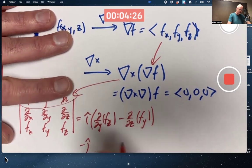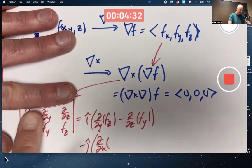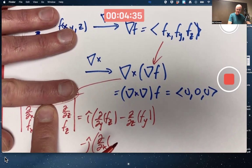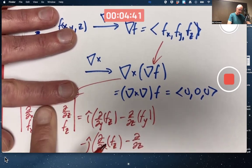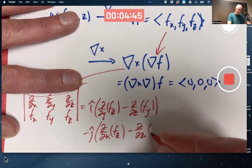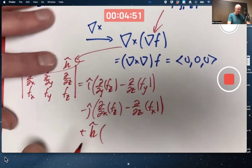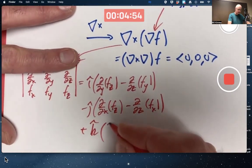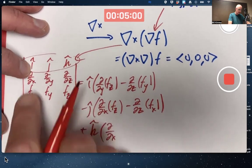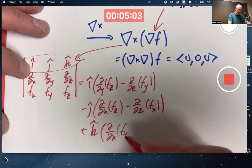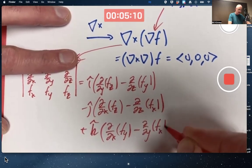Then it's also a minus j hat times the determinant of this sub matrix, partial with respect to x of fz, minus the partial with respect to z of fx, plus k hat times the determinant of that sub matrix, which is again not a literal determinant because these are not literal products, partial with respect to x of fy minus partial with respect to y of fx, and these are all a bunch of zeros.